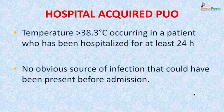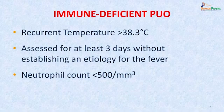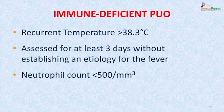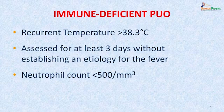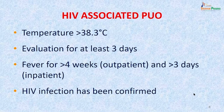Hospital-acquired PUO is temperature more than 38.3 degrees occurring in a patient hospitalized for at least 24 hours, with no obvious source of infection present before admission. Immune-deficient PUO is recurrent temperatures more than 38.3 degrees centigrade assessed for at least 3 days without establishing an etiology — note this is 3 days versus the classical PUO's 1 week — with neutrophil counts less than 500 per cubic millimeter. HIV-associated PUO is temperature more than 38.3 degrees centigrade, patient evaluated for 3 days, fever present for more than 4 weeks in outpatient or more than 3 days in inpatient, with confirmed HIV infection.